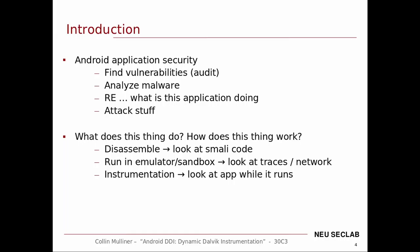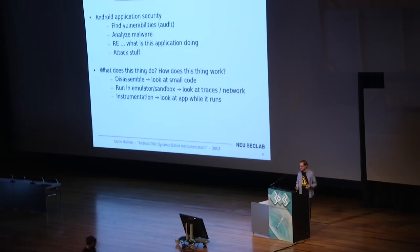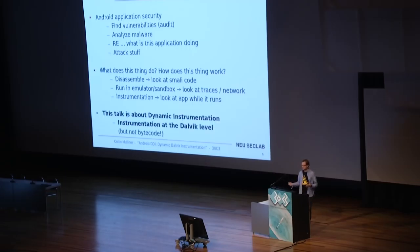Android application security is pretty interesting for various reasons. Maybe you want to find vulnerabilities, analyze malware, or just want to reverse engineer an application to see what it's doing. Maybe you want to attack an application or attack the OS. Currently, people were really just disassembling Dalvik code, looking at the Smali output, or running an application in an emulator or sandbox and looking at execution or network traces. Or maybe doing some static instrumentation — adding some code to an application. But this talk is really about dynamic instrumentation, at runtime, and we're not going to look at bytecode.